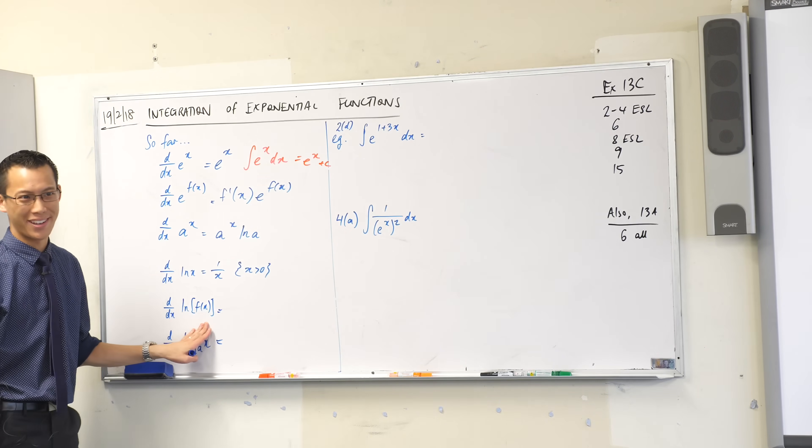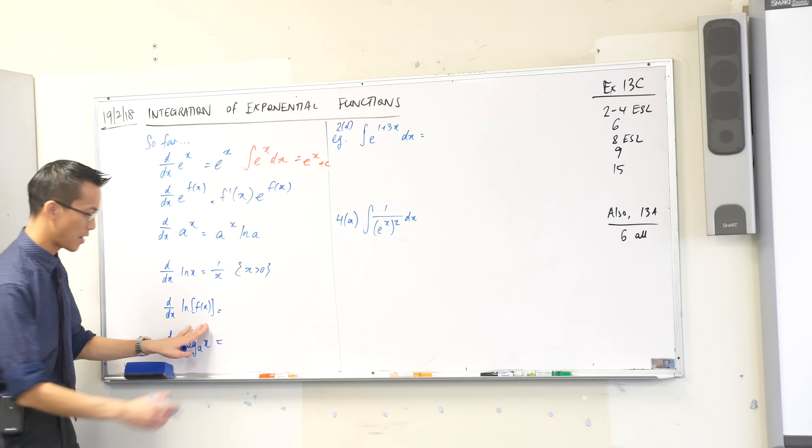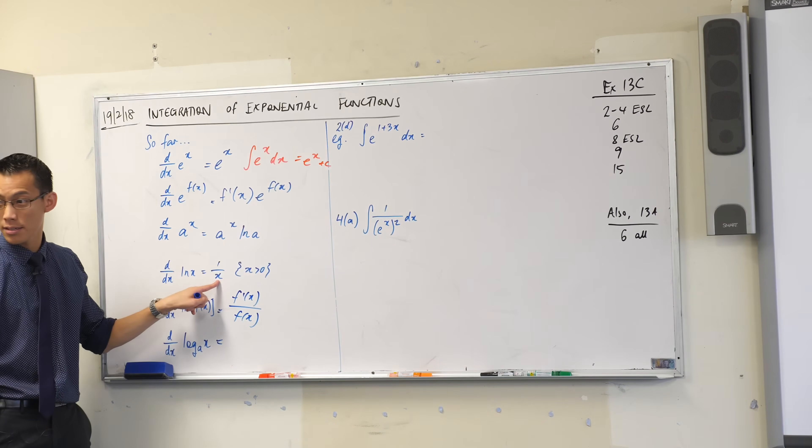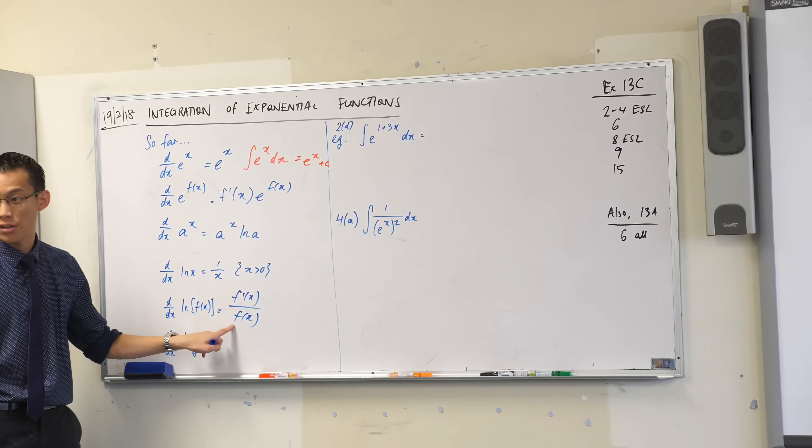What about when we do chain rule? What happens? Okay, it's really nice and easy to remember, right? It's f dash on f, it's just like this, you do the inside, then you do the outside.